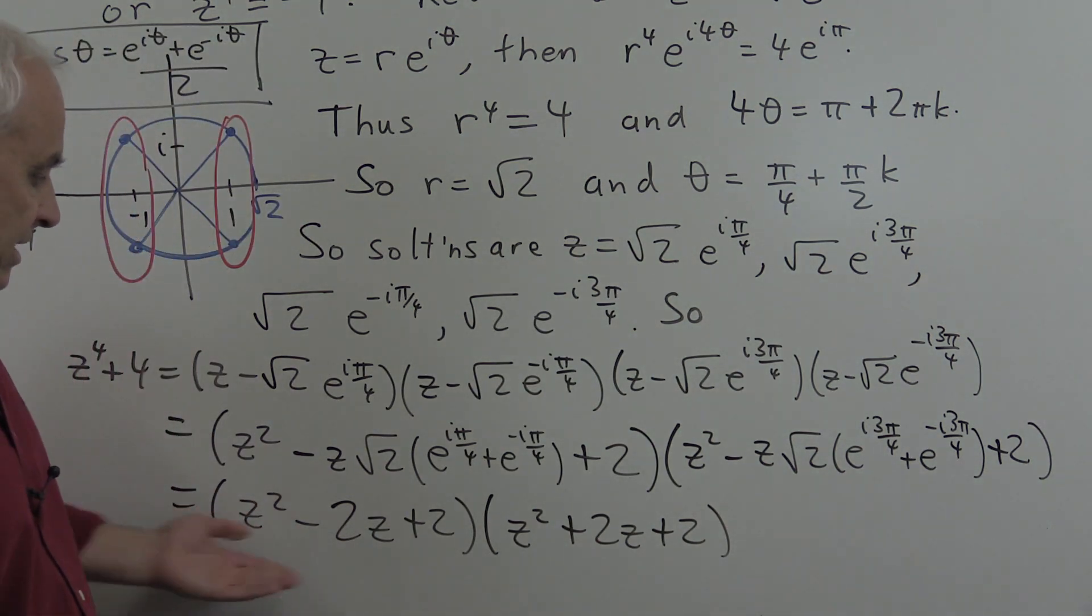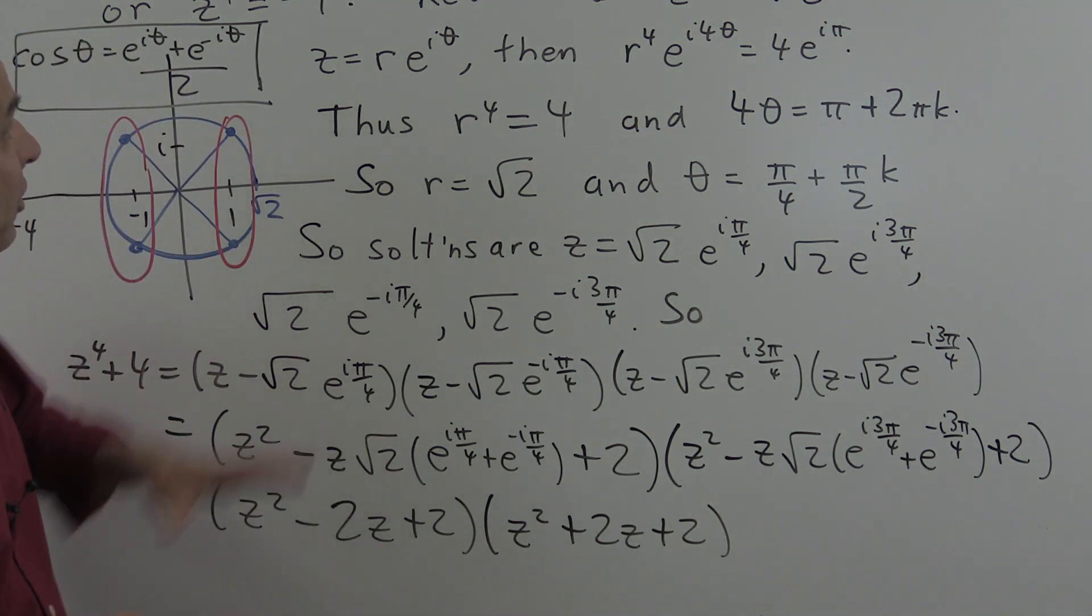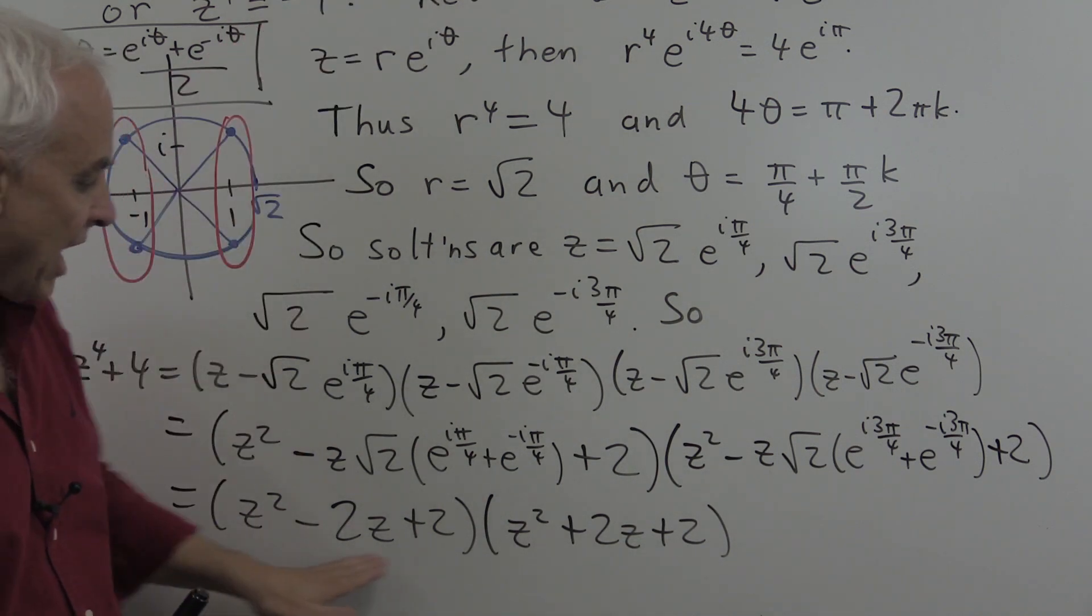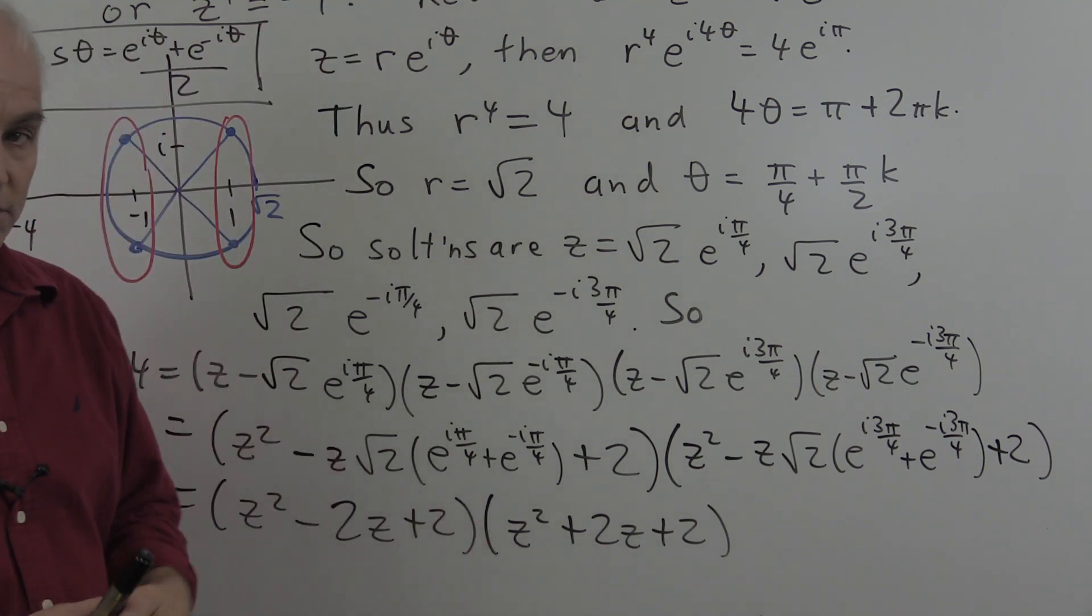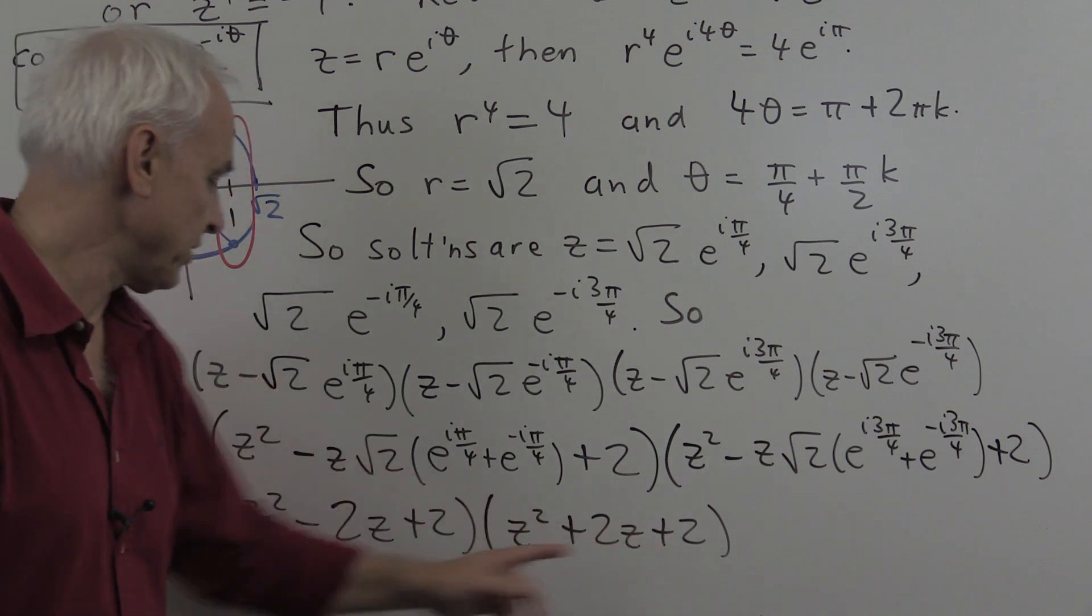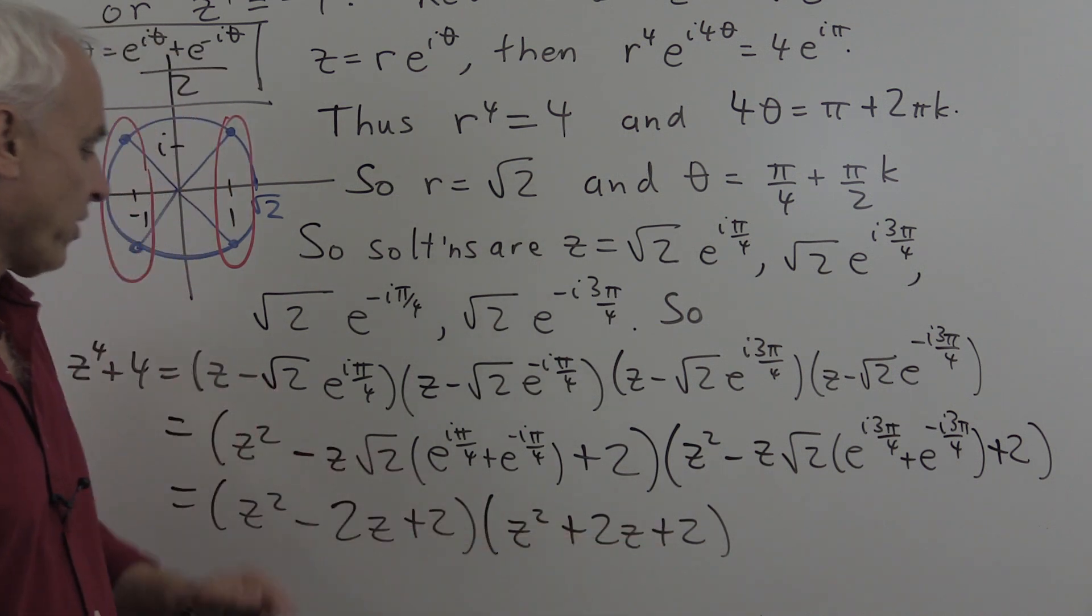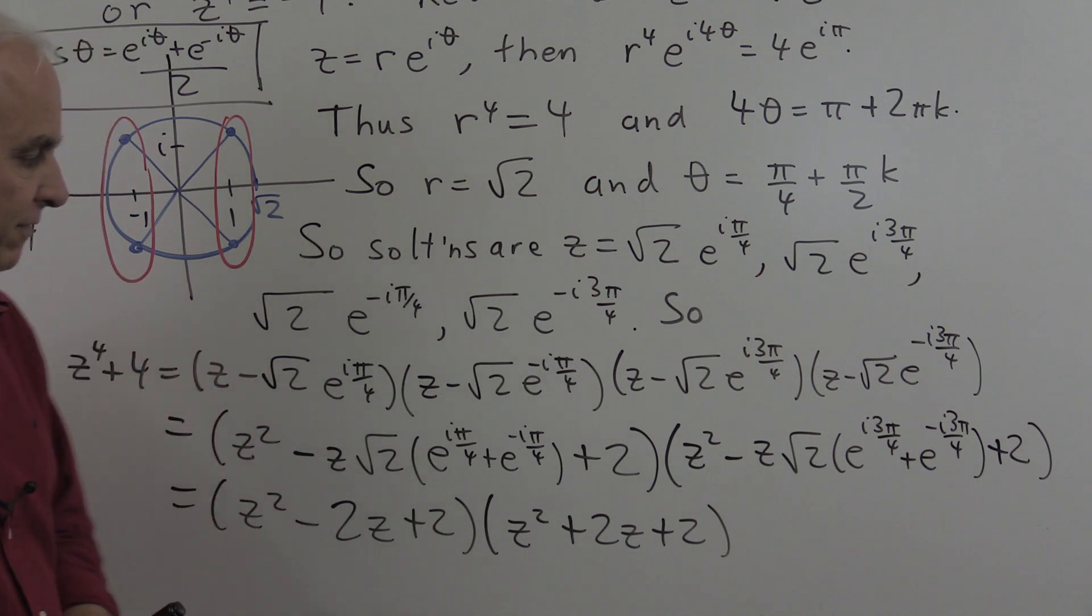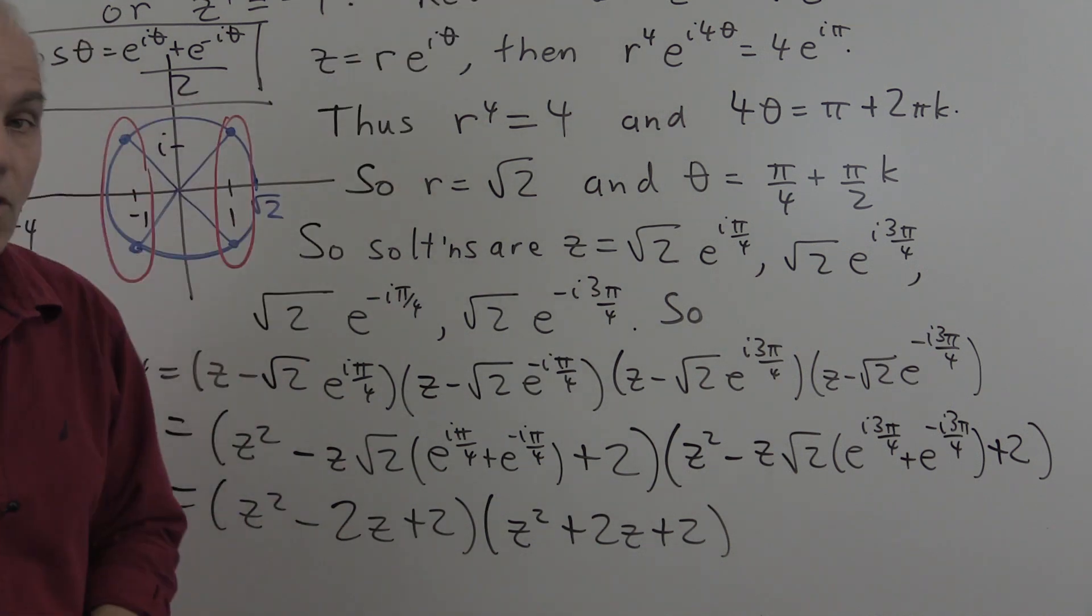And that's now a somewhat miraculous factorization of z to the fourth plus 4 now entirely with real coefficients. In fact, with rational coefficients. And you could check that if you actually multiply these things out, then you would get z to the fourth plus 4. All the other terms disappear. For example, the z squared terms. There'll be a 2z squared here, a 2z squared here, and a minus 4z squared, so they'll all disappear. That kind of thing. So there's a factorization of z to the fourth plus 4 over the rational numbers.